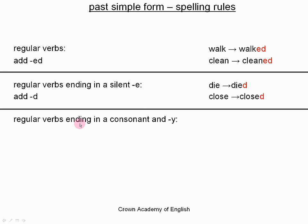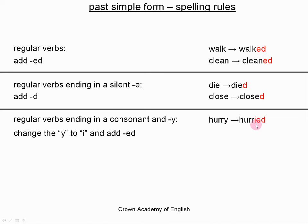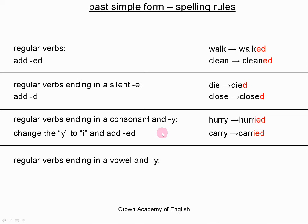For regular verbs ending in a consonant and then the letter Y, we change the Y to I and then add ED. So we remove the letter Y, change it to an I, and add ED. However, if a verb ends in a vowel and then Y, it is just like a regular verb. For example: stay, stayed. Play, played.